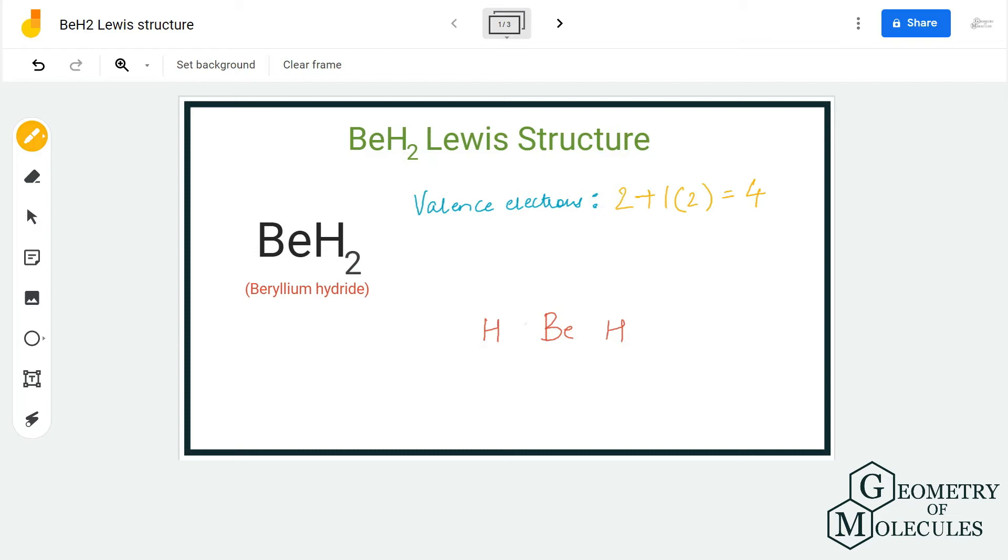As we all know, hydrogen atoms do not take the central position in Lewis structures. It will be placed on the outside and the beryllium atom will take the central position over here.